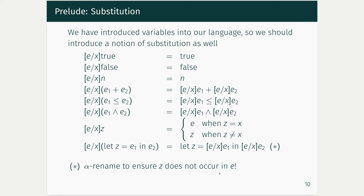Before we talk in detail about the semantics of the programming language, I'm going to talk a little bit about substitution. The reason is that as soon as we introduce variables into a language, you need to talk about what substitution means. Because we've introduced 'let x equals e in e prime', we have the idea in mind that x stands for e inside of the body of e prime. So how do we actually get e into the body? We're going to give the definition of the substitution operation — substitute e for x into the body of the expression.